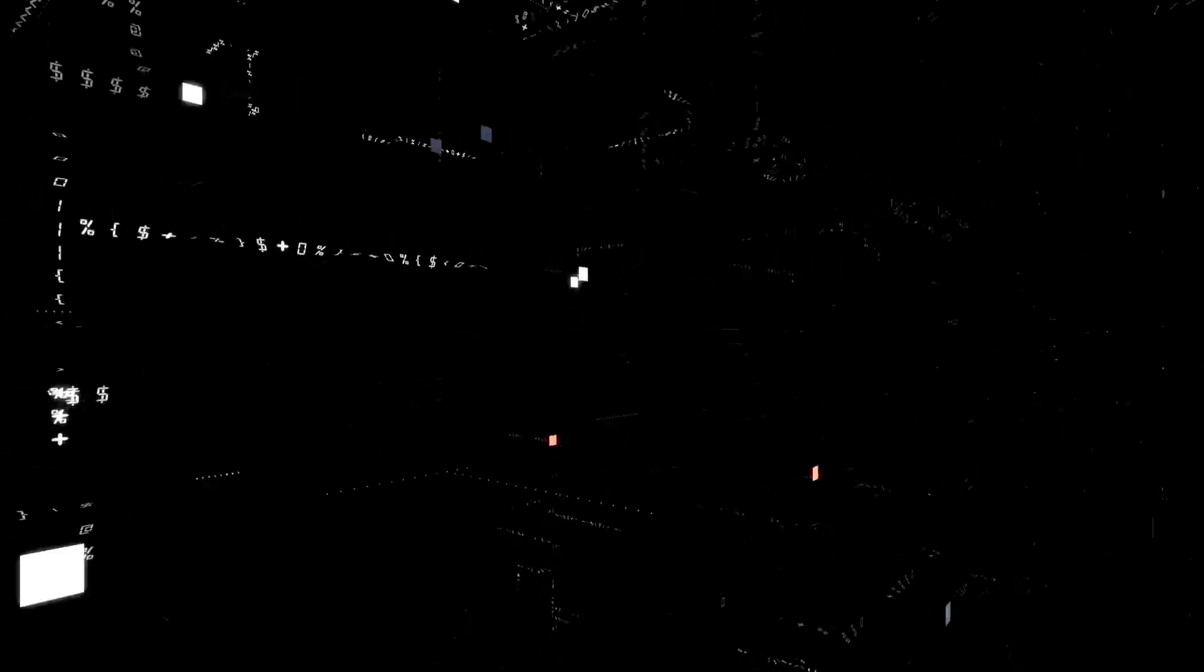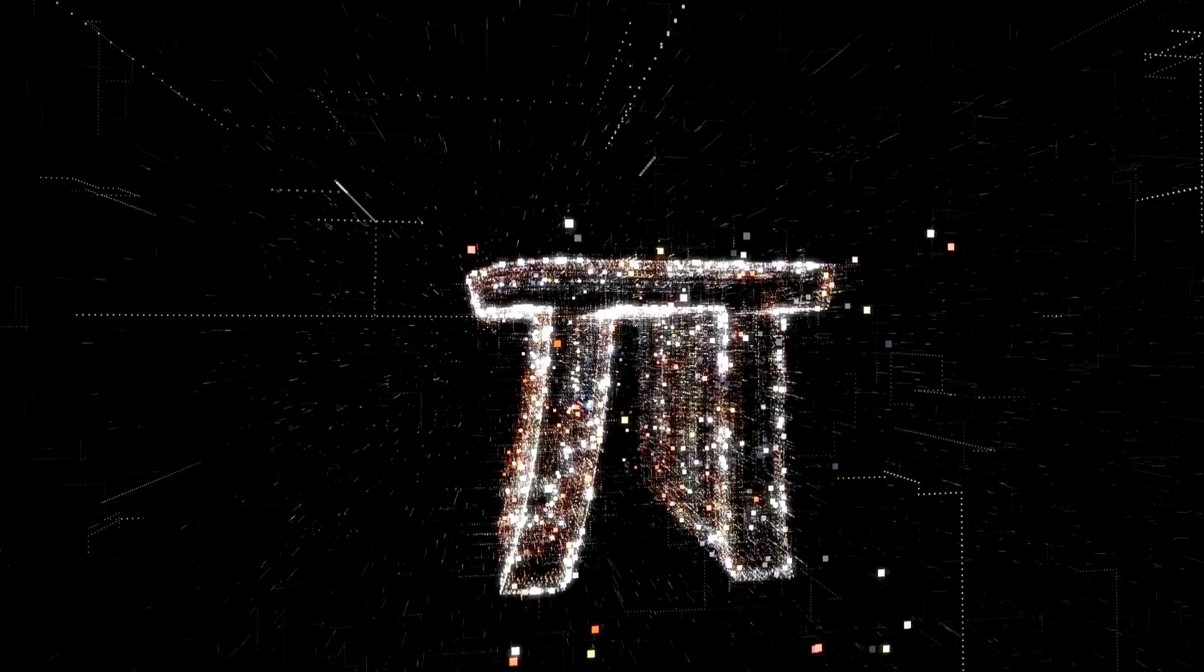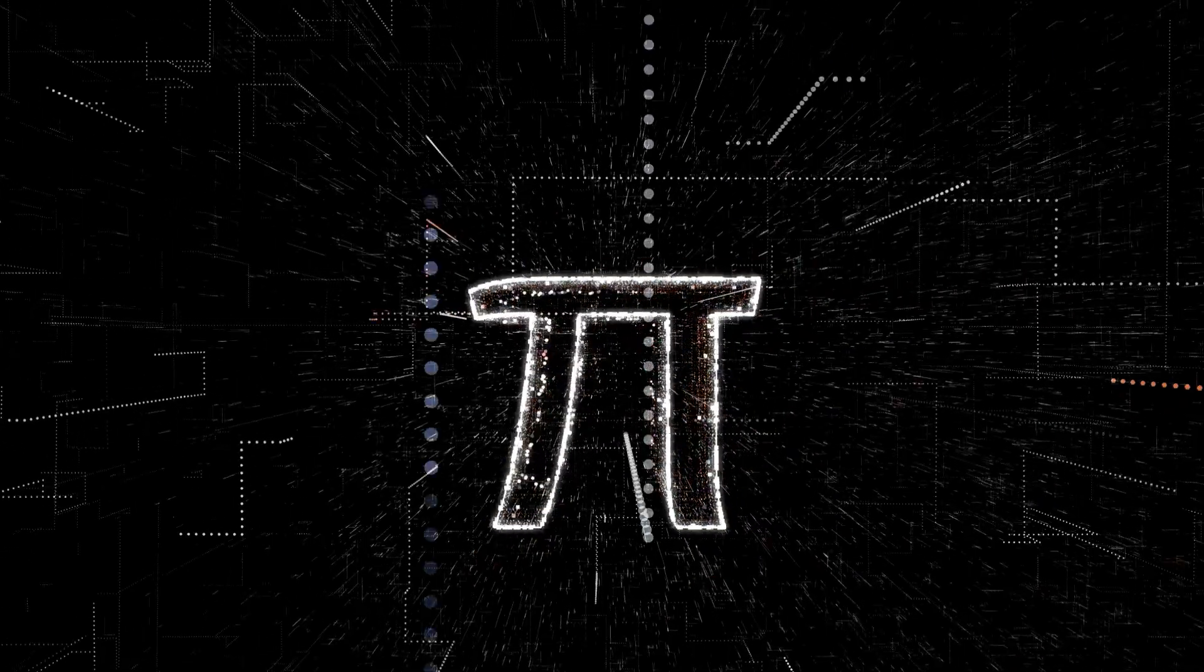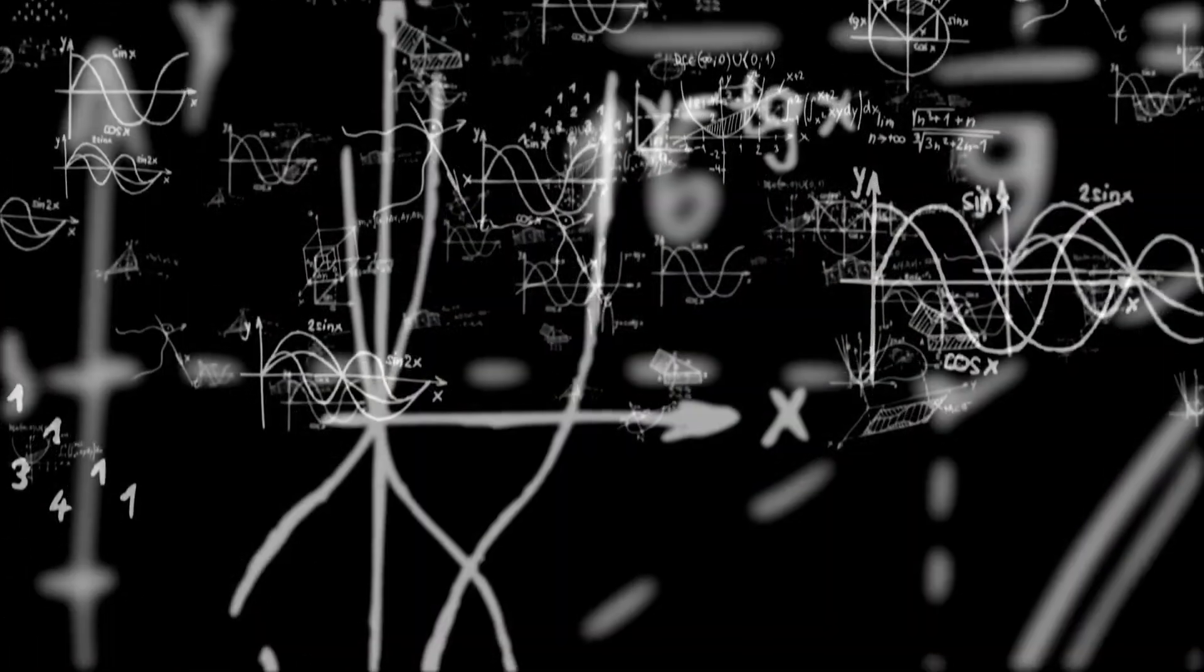Pi is a mathematical constant that represents the ratio of a circle's circumference to its diameter. It is an irrational number, meaning it cannot be expressed as a simple fraction, and its decimal representation goes on infinitely without repeating.